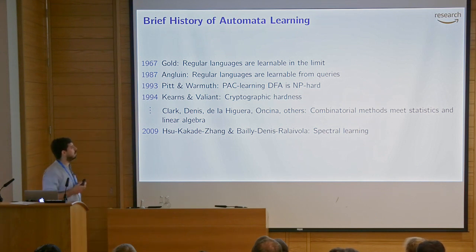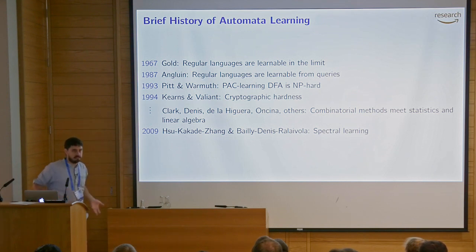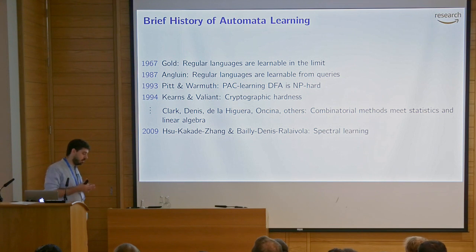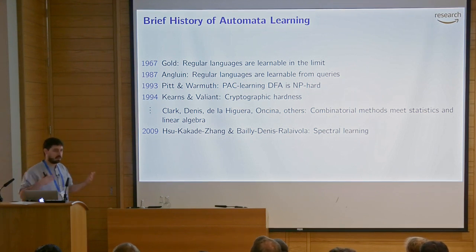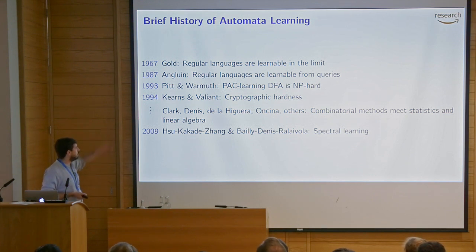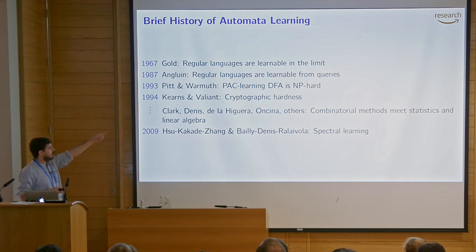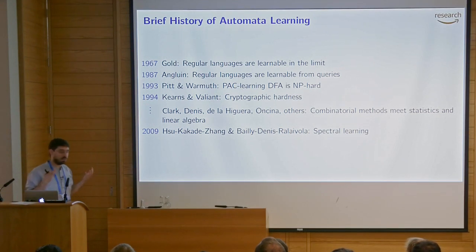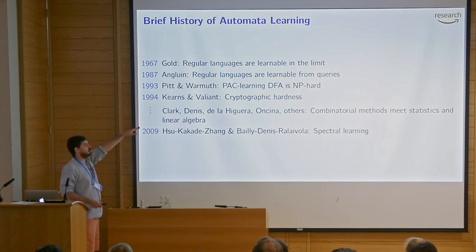In the early 90s, learning theory really started to blossom and people proposed more realistic models of learning — definitions of what it means to learn and deal with data from the real world by introducing randomness, for example. In these more realistic models like PAC learning, the first results were kind of negative. In '93, Pitt and Warmuth showed that PAC learning regular languages or DFAs is actually NP-hard, whereas previous algorithms could do it in polynomial time in those more unrealistic learning models. Then in '94, Kearns and Valiant extended this NP-hardness to also cryptographic hardness.